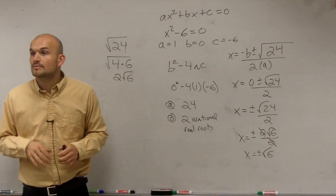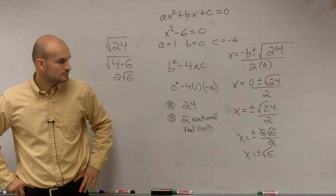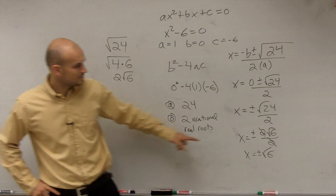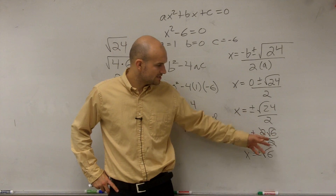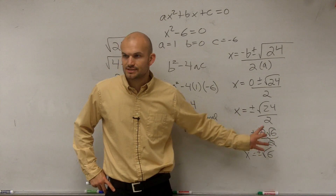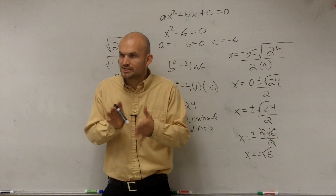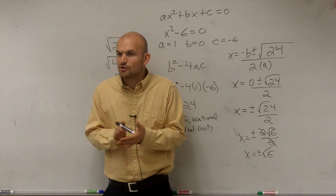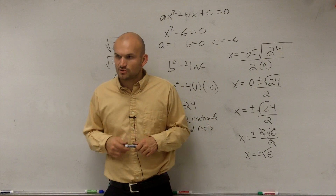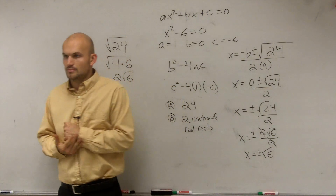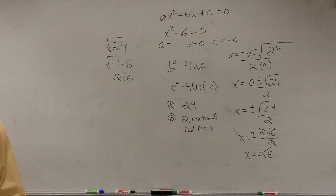Is it still the square root of 6 over 2? No — you don't divide the 2 into the 6. That's only when you have it separated, like with an addition or subtraction, when it's two terms — that's when you divide into both of them. But with just one term, it's all together.